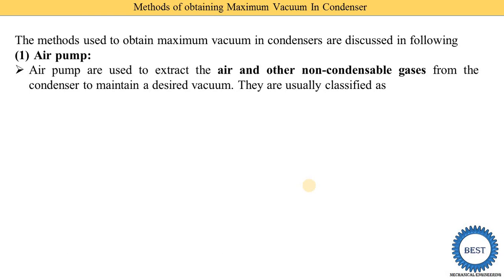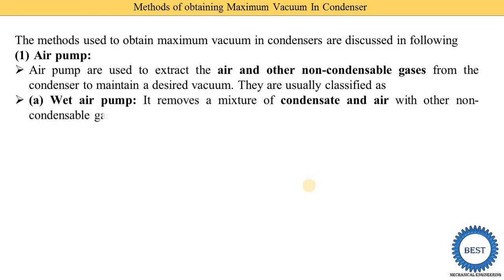There are two types of pump used. The first pump is the wet air pump and the second one is the dry air pump. From the term 'wet air pump' we understand that condensate is also removed by the same pump — meaning air and condensate are removed by the same pump. This pump removes a mixture of condensate and air with other non-condensable gases. It is called the wet air pump.